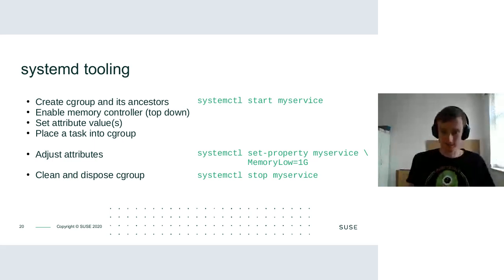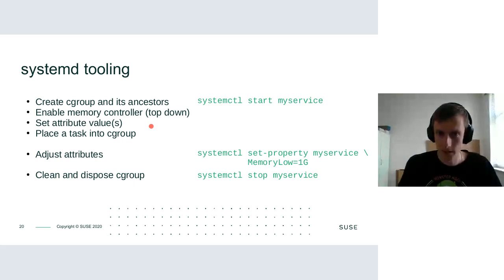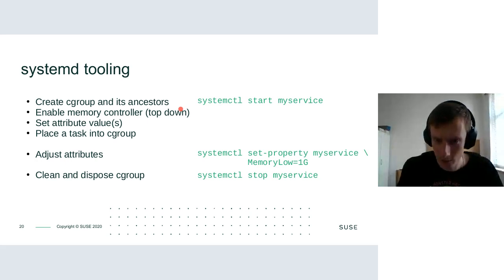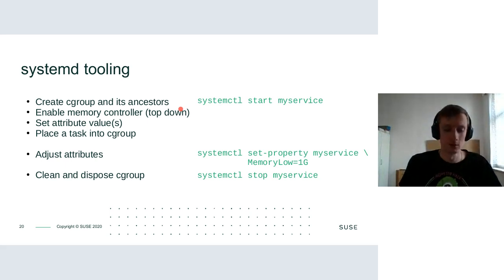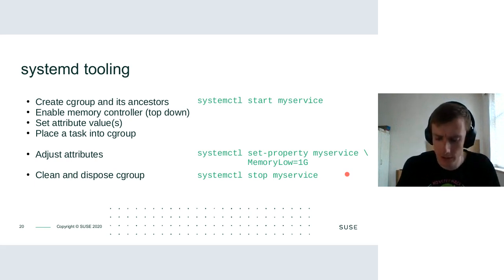Here we can see what systemd does: it takes care of all the boring stuff — creating the cgroup and its ancestors if nested, enabling the memory controller, setting the attribute, and then putting the task we need into the cgroup. I want to emphasize that this happens lazily, so the cgroup is only created when the service is started. We can also change the attributes at runtime and get cleanup.